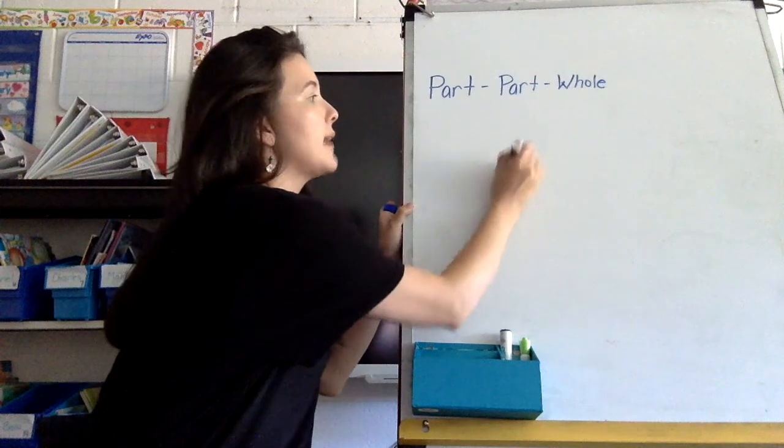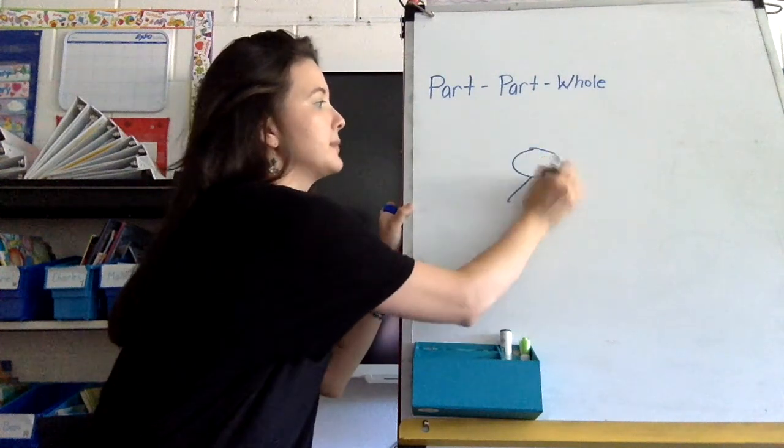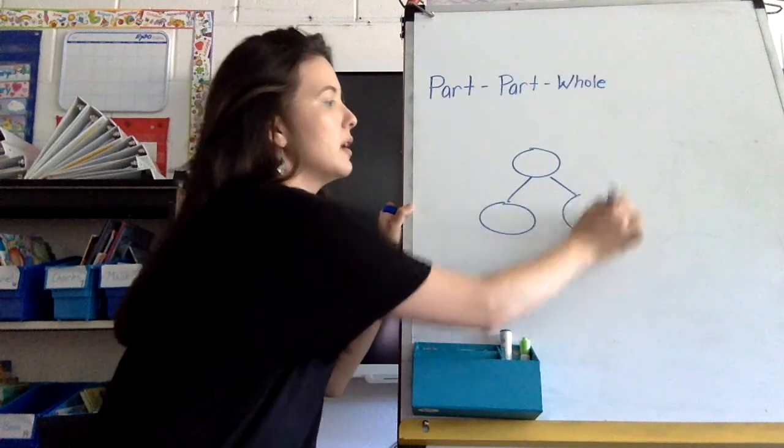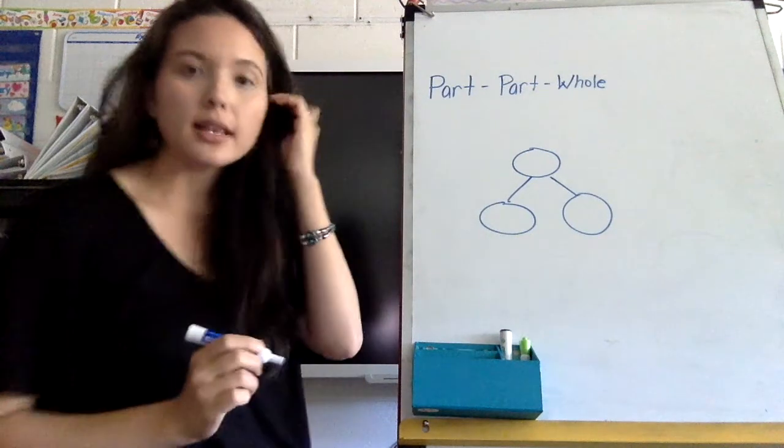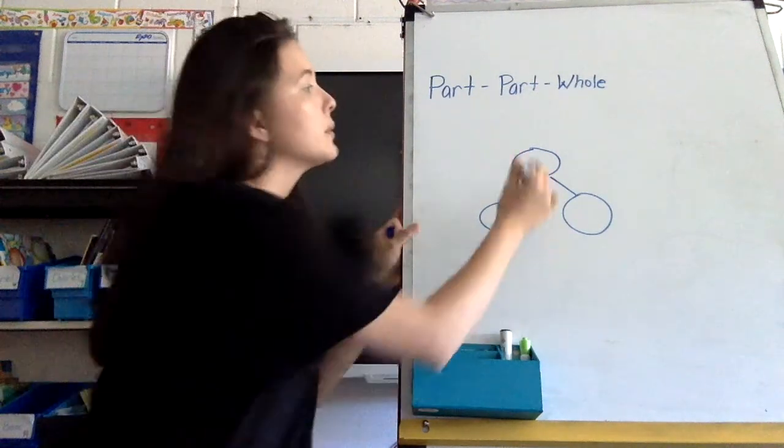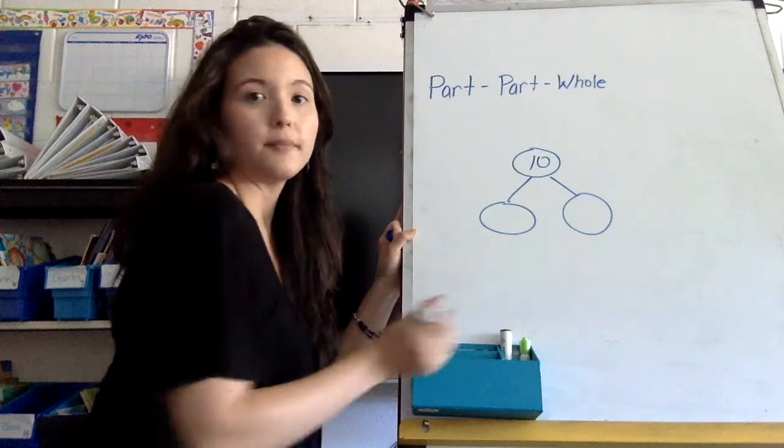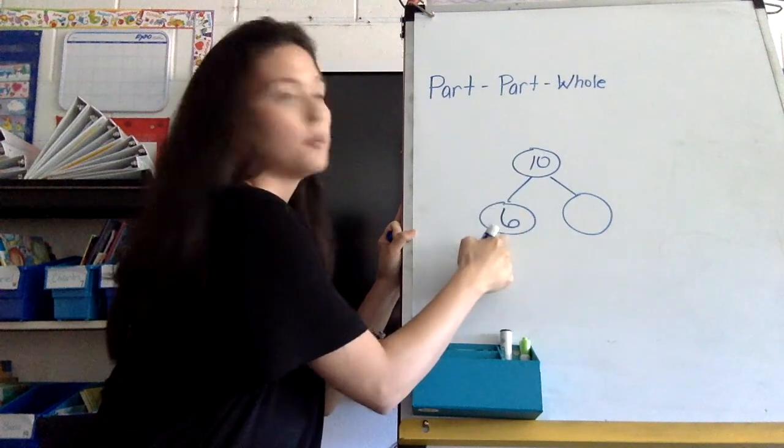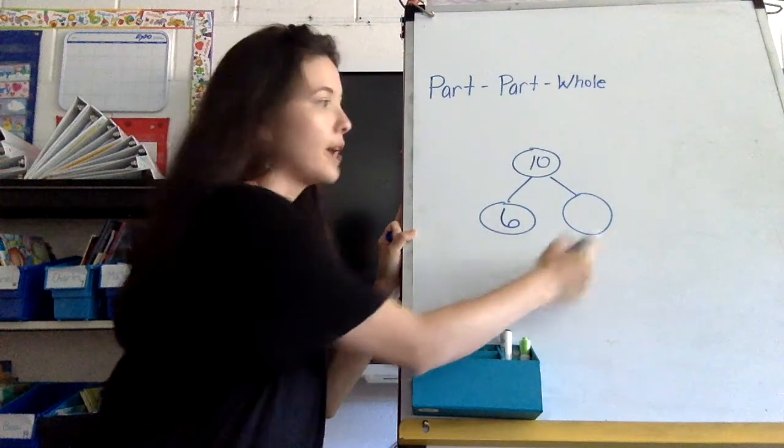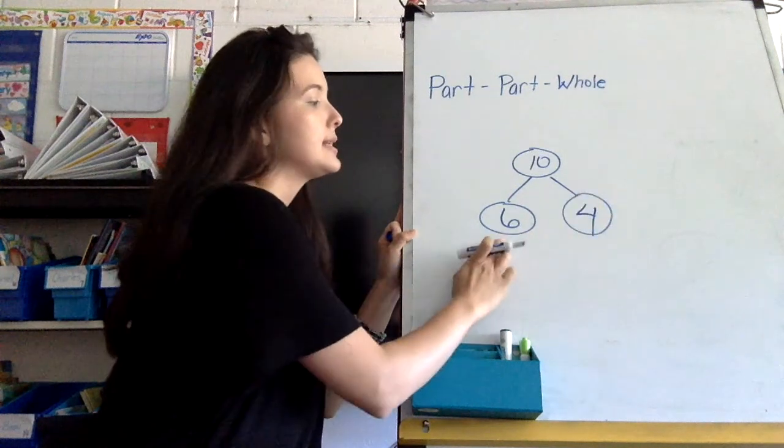We are going to be practicing part-part-whole, so you may remember in kindergarten how we did part-part-whole with our number bonds. Okay, and this is how our number bonds looked like when we were in kindergarten.